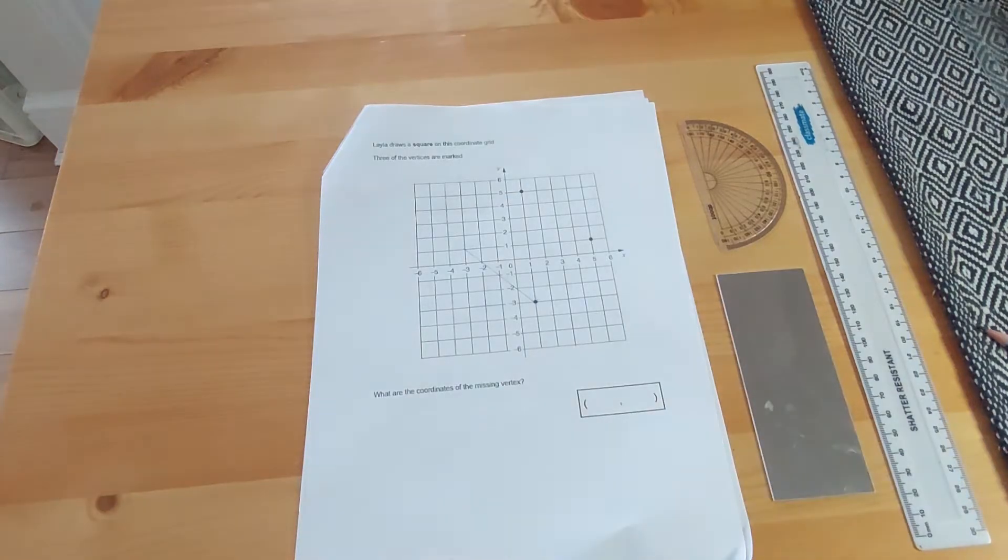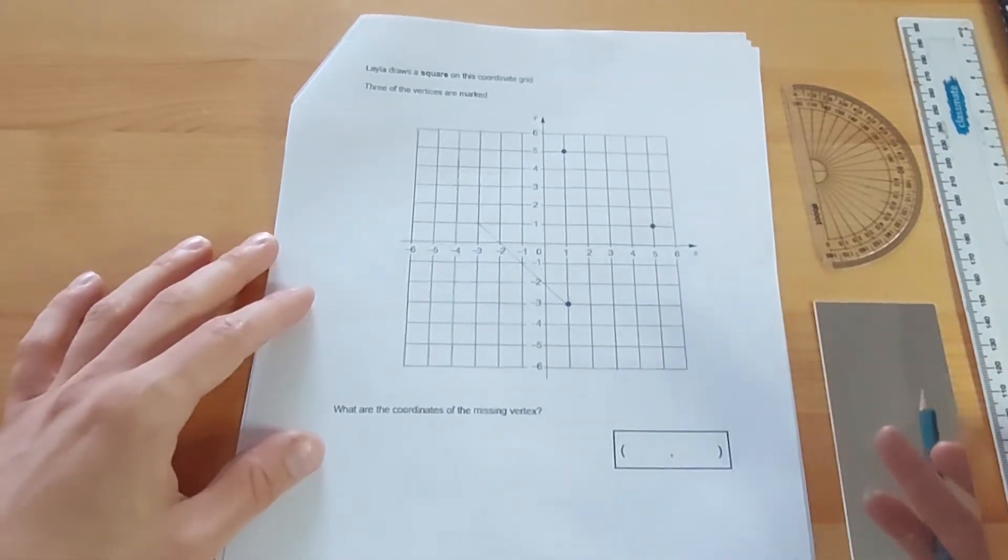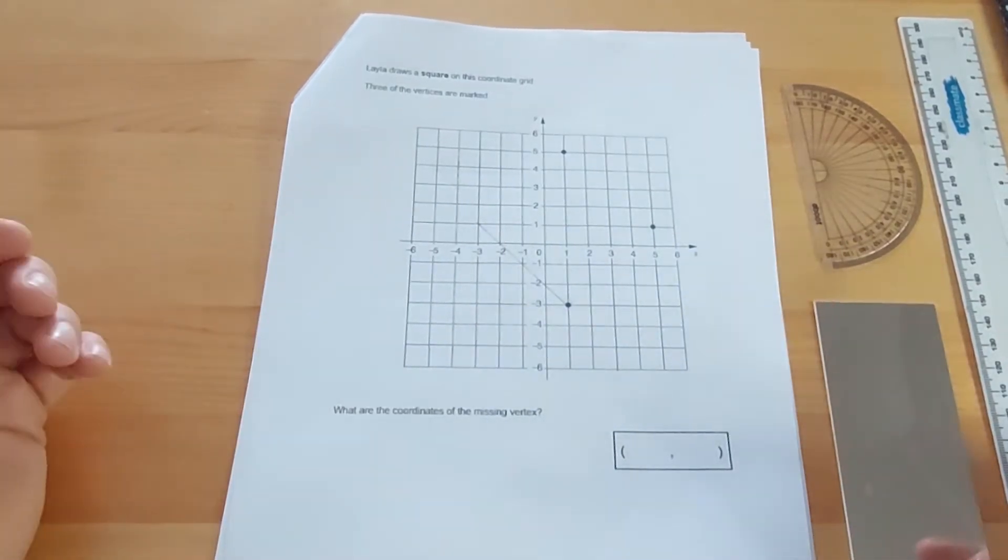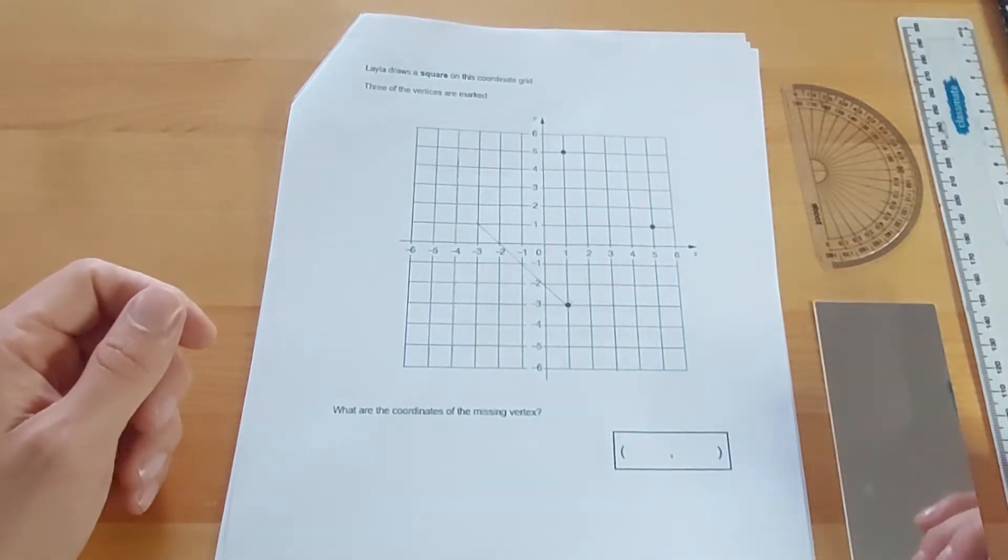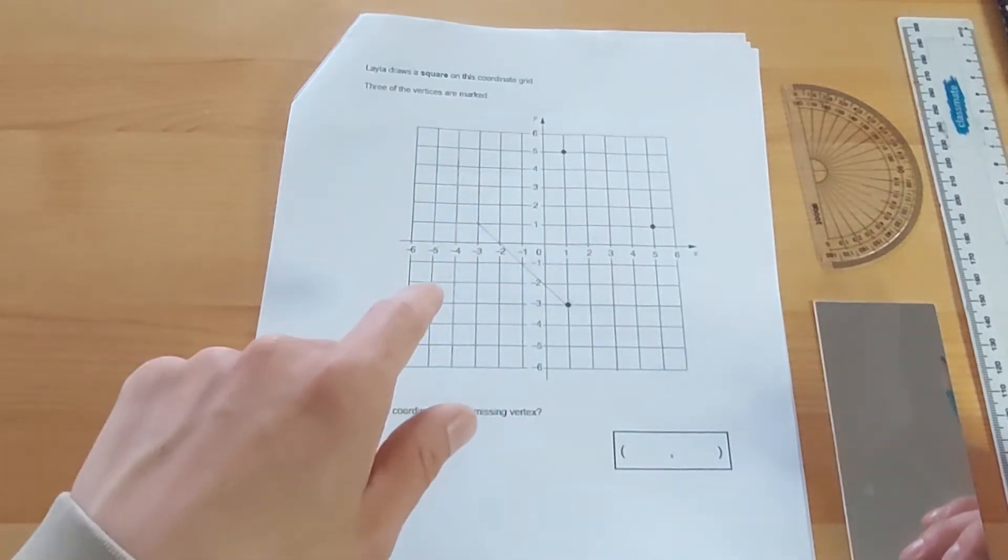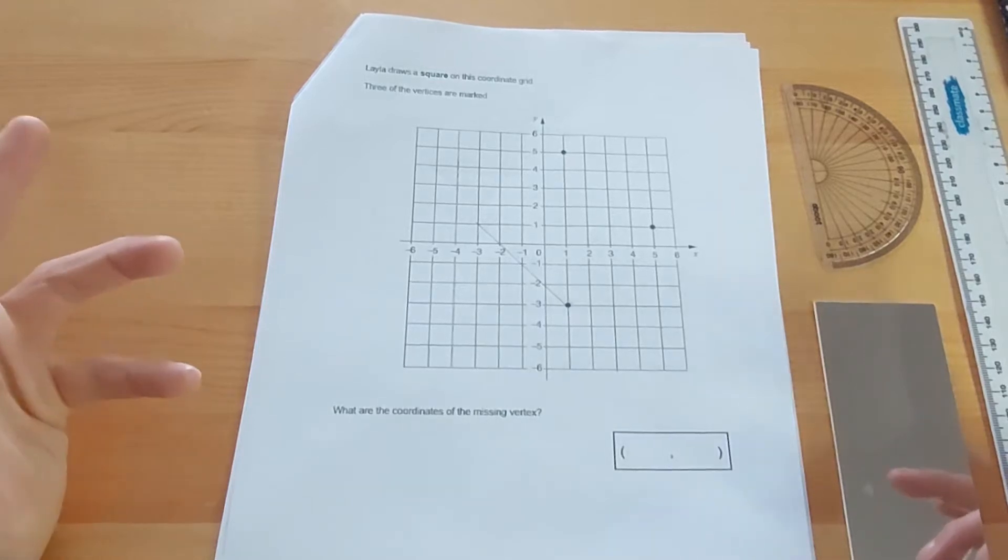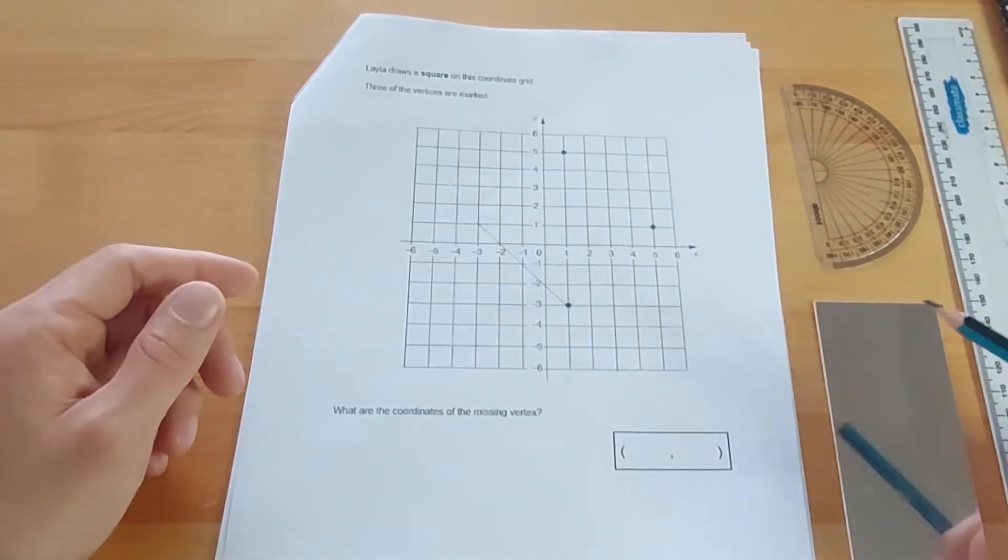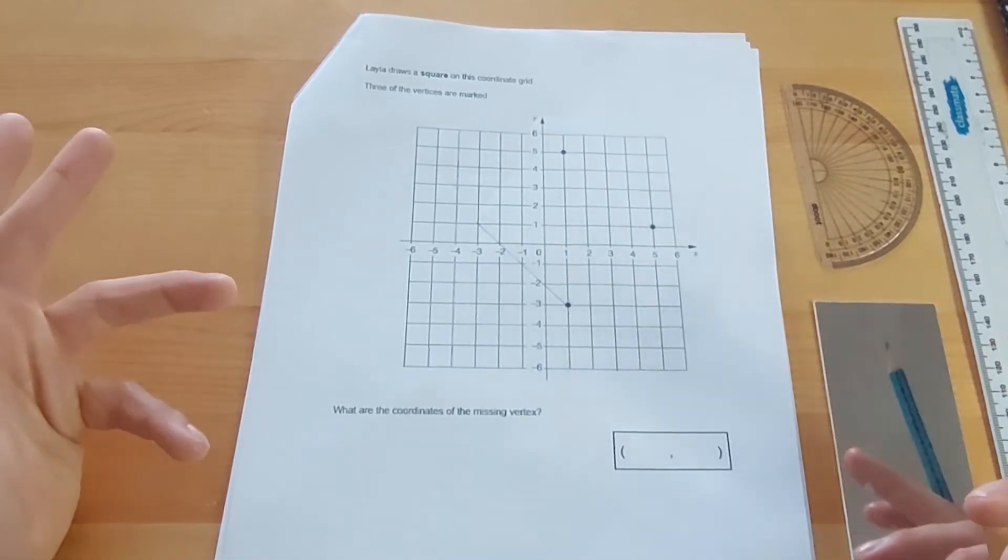The questions I picked out for today are coordinates questions. Now, there's a good chance there'll be a question on coordinates in the SATs tests in the maths reasoning paper 2 or paper 3. And this question here is a SATs question from a previous paper, so you can see what kind of thing it's going to ask. Leila draws a square on the coordinates grid. This is a four-quadrant coordinates grid with both positive numbers and negative. Three of the vertices are marked. Vertices means corners. The children would need to know that vocabulary, that language, in order to attempt this question.